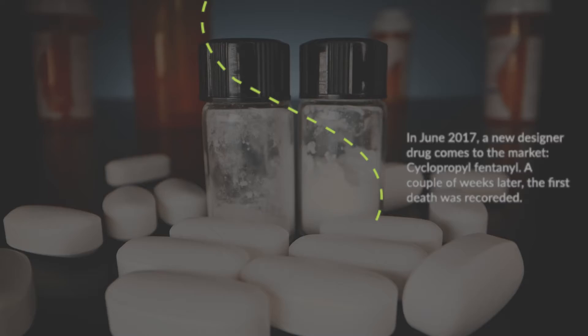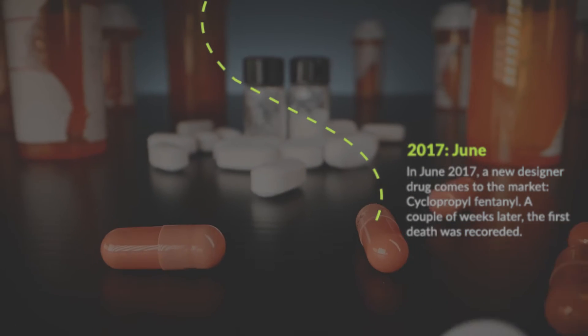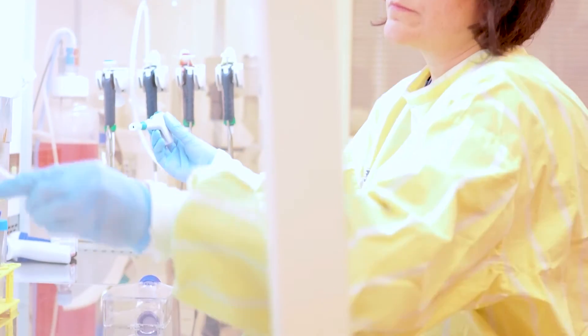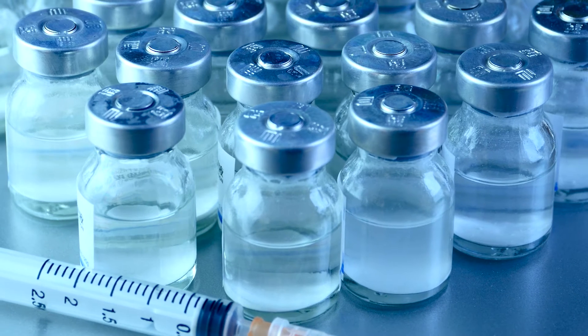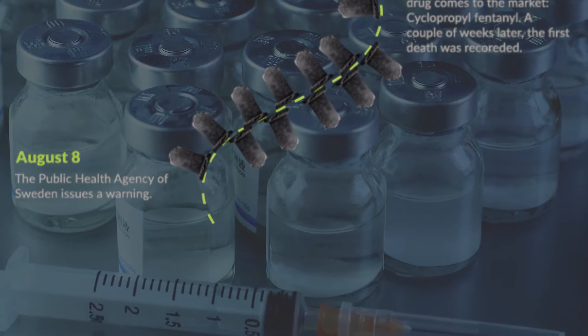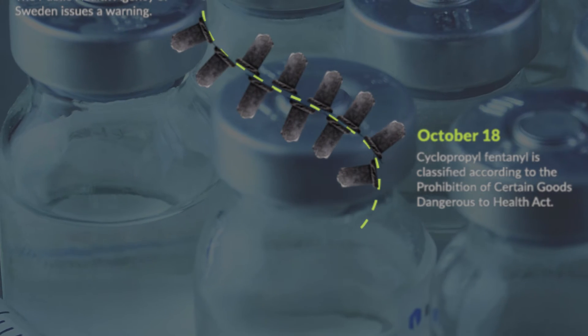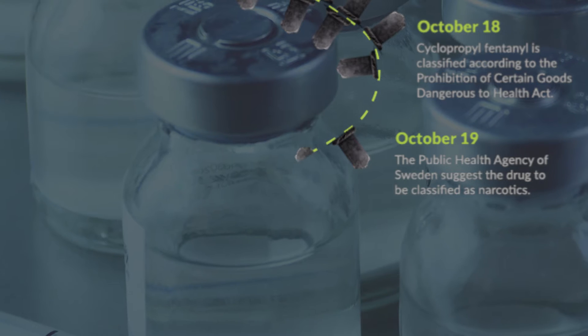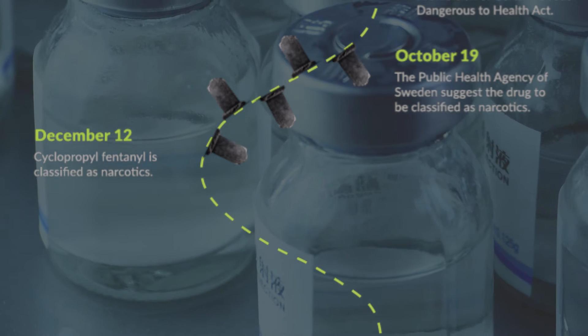On top of this, they were sometimes mislabeled, heavily marketed, and easy to use. Some were sold as nasal spray. In June 2017, a new designer drug came to the market: cyclopropyl fentanyl. A couple of weeks later, the first death was recorded. At the same time, the researchers start analyzing the substance to help the authorities in making the substance illegal. In August, researchers analyze the substance and a warning is issued. In October, a permit is needed to handle the drug. In December, the new substance is classified as narcotics and the death toll plummets.